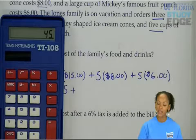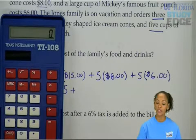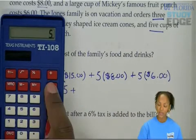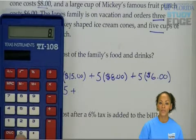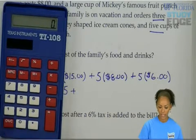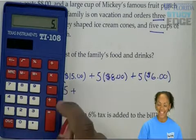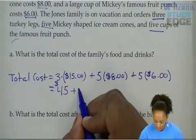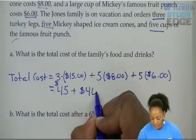Plus, five times eight. That'll give us the amount of money they spent on Mickey-shaped ice cream cones. So five times $8.00. Sorry, I did that wrong. Five times eight gives us $40.00. So they spent $40.00 on ice cream cones.